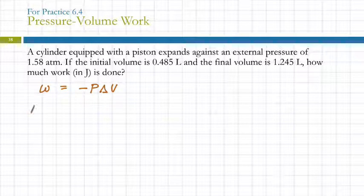So change in volume, the delta means final minus initial. So this is the final volume minus the initial volume. Volumes can't be negative, but a change in volume can be negative. You can go from a bigger gas to a smaller gas. The change would be negative.